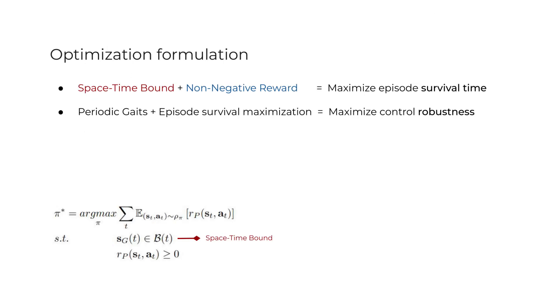When combining the space-time bound with a non-negative reward function, the agent is encouraged to survive for as long as possible within the bound. Now, because the reference motions are periodic stable trajectories, maximizing survival time translates to maximizing the control policy robustness.